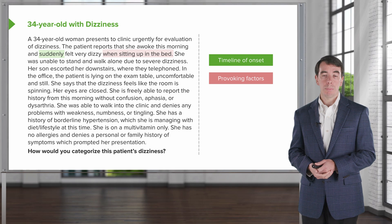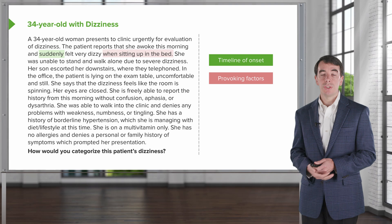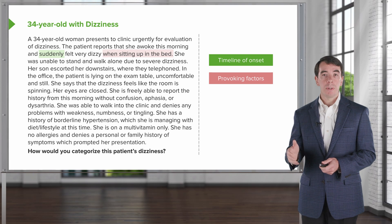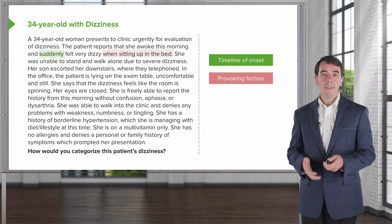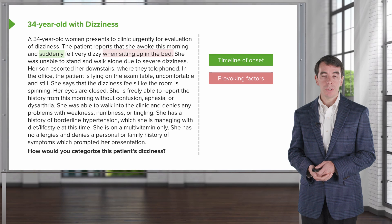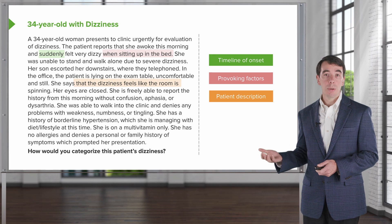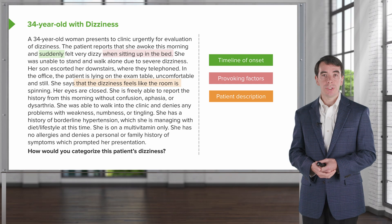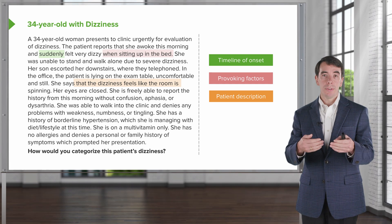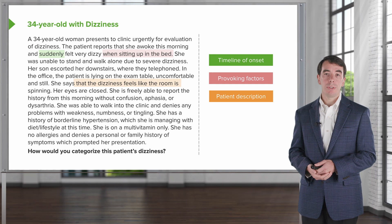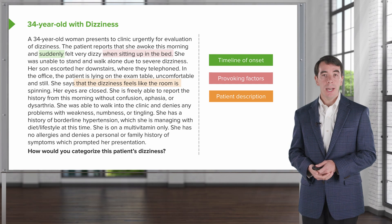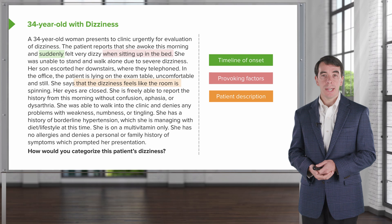The second feature is provoking factors or provoking signs. Here, this patient's dizziness was provoked when she was sitting up in bed or potentially turning her head, and those provoking factors are important for driving us towards certain diagnostic possibilities. The last is the patient's description. The history is really important for beginning our search for what the cause of the dizziness is. Here, this patient describes the room as spinning, and that will be important for labeling this problem, categorizing her symptom, and ultimately arriving at the diagnosis.